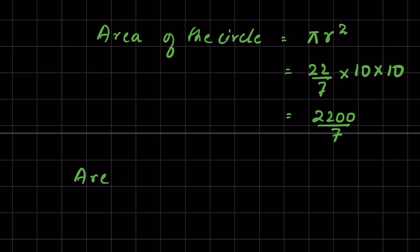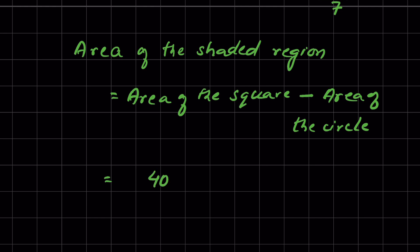Area of the shaded region equals area of the square minus area of the circle. Area of the square is 400 centimeters squared minus area of the circle, 2200 upon 7 centimeters squared.